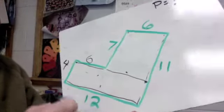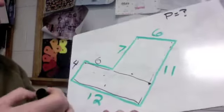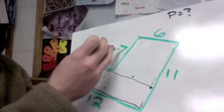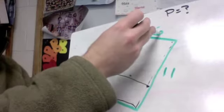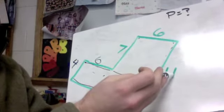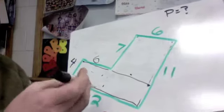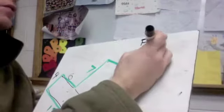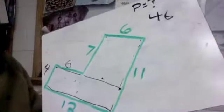Now all we need to do is total up the amounts. 4 and 6 makes 10, plus 7 is 17, plus 6 is 23, plus 10 is 33, plus 1 is 34, plus 10 is 44, and then plus 2 would be 46. So the perimeter of this shape with the missing sides is going to be 46.